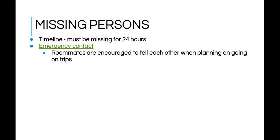In the case of a missing person, the student must be missing for 24 hours. Make sure you and your residents have filled out your emergency contact information online, and residents are encouraged to tell someone, like you or their roommate, where they are planning on going and when they plan on coming back when they go out.